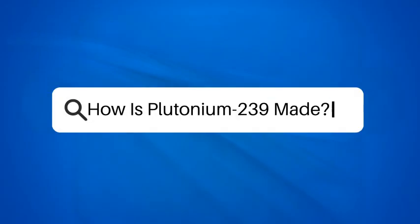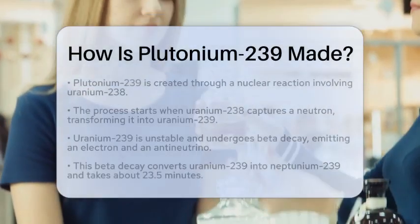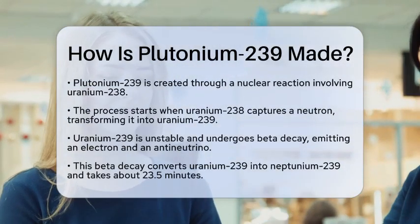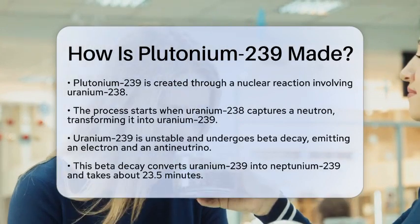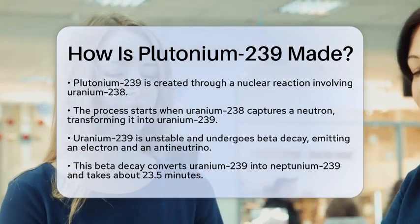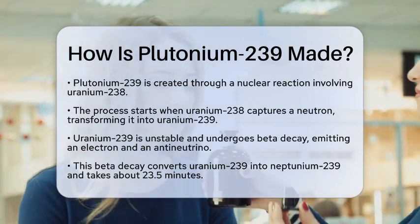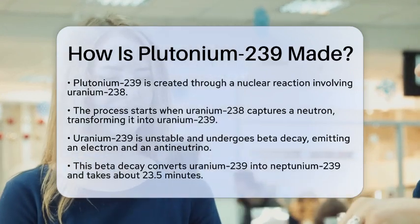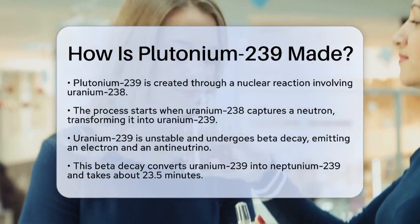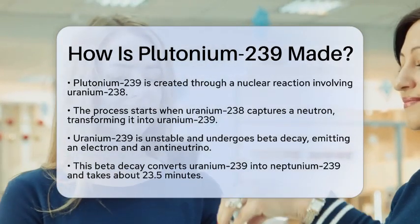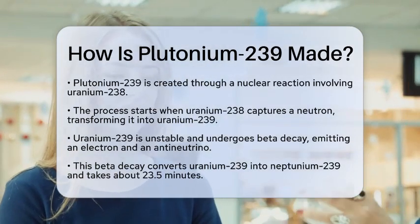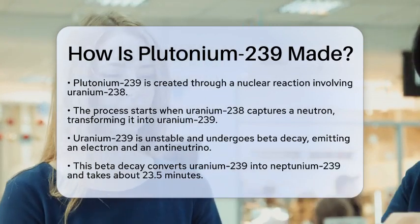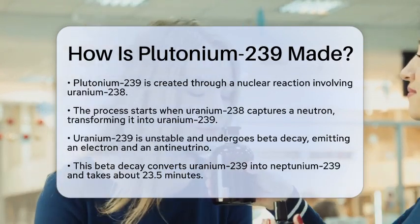How is Plutonium-239 made? Have you ever wondered how a substance like Plutonium-239 is created? This isotope plays a significant role in both energy production and nuclear science. Let's break down the process of how Plutonium-239 is made step by step. It is primarily produced through a nuclear reaction involving Uranium-238, which is a common isotope found in natural uranium.